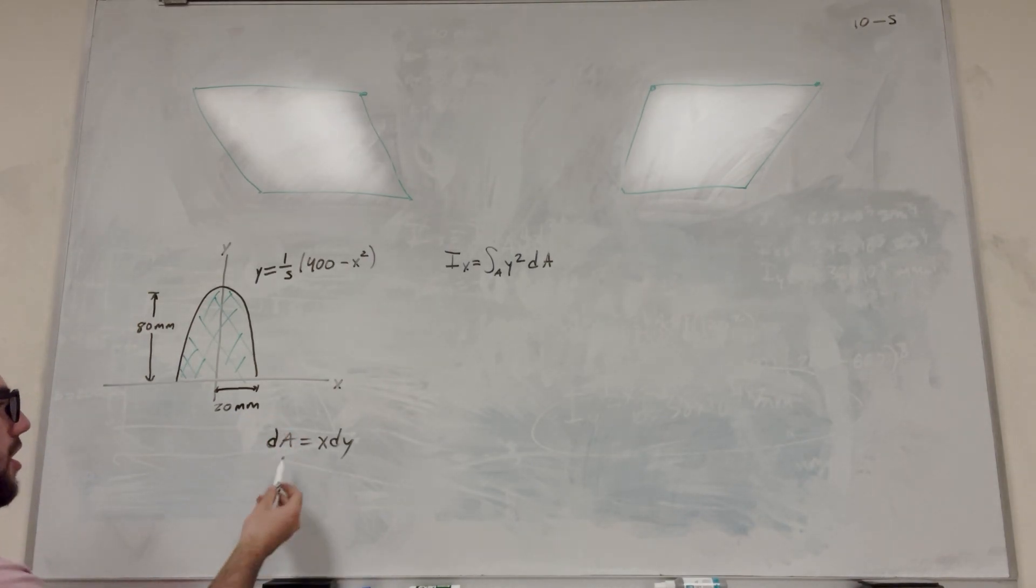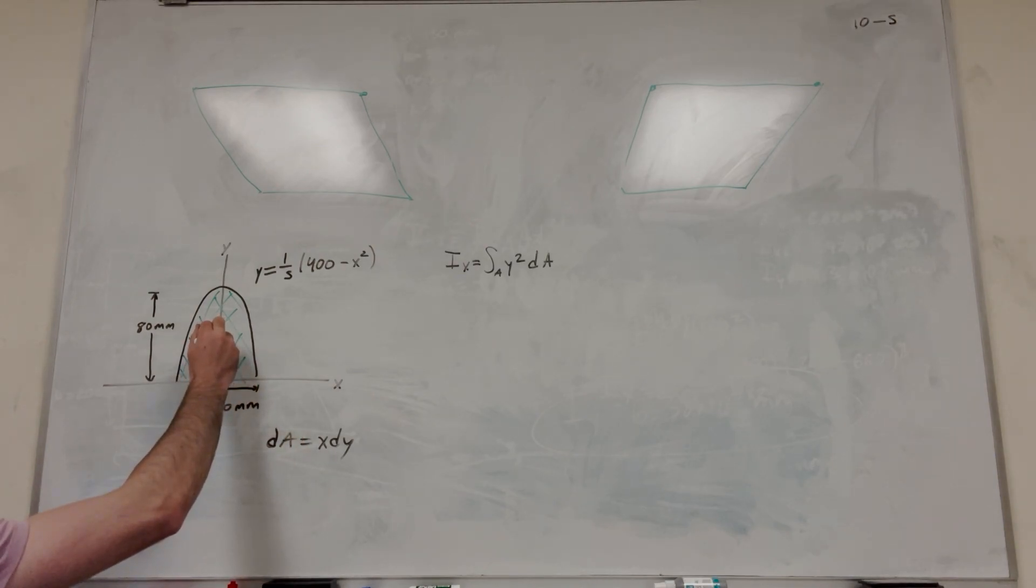So this is our equation, right? So we need to find out what x is in this case. So dy is how much up we're going. So this is dy, however far up, and then x is how far out we go from the y-axis. So this is x, and then this is dy, right?